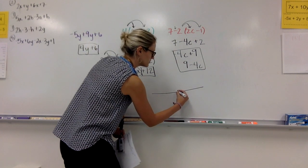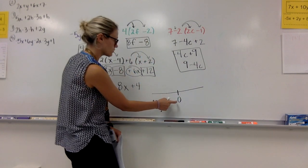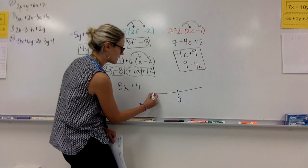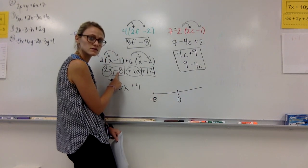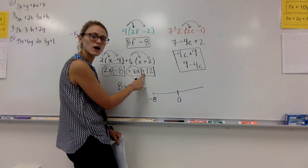-8 + 12 is a positive 4. If you are not sure how I got this positive 4, you would look at your number line. Here's my 0. I know I'm at, I start at -8. I'm adding 12.